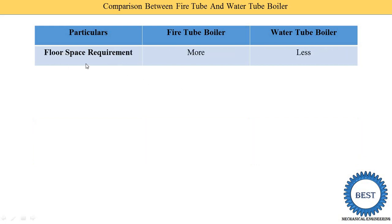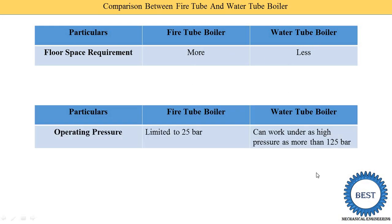Next point is floor space requirement. Fire tube boilers require more space and water tube boilers require less space. In a water tube the pressure is more than 125 bar and in fire tube it is only 25 bar. When higher pressure is required, a higher thickness of the pipe is required, but less space is needed — because when pressure is increased the volume of the particular substance is also reduced. That is why water tube boilers require less space. Fire tubes require more space because the pressure is limited to 25 bar, so the volume is larger and it requires more space.